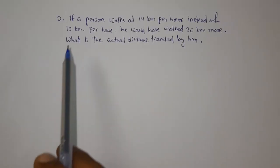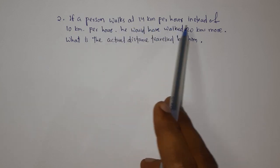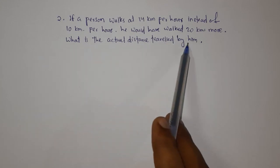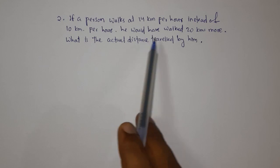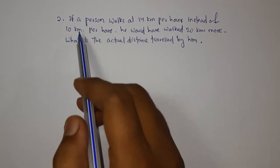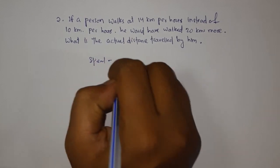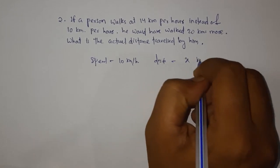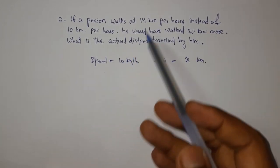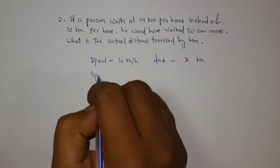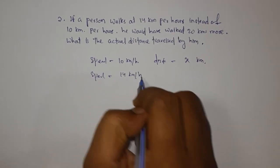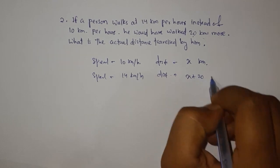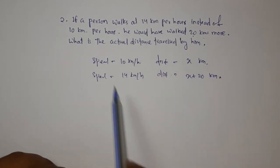Next question: if a person walks at 14 km per hour instead of 10 km per hour, he will cover 20 km more. What is the actual distance? Let the actual distance be x km. At 10 km per hour, the time taken covers distance x. At 14 km per hour, the distance covered is x plus 20 km.